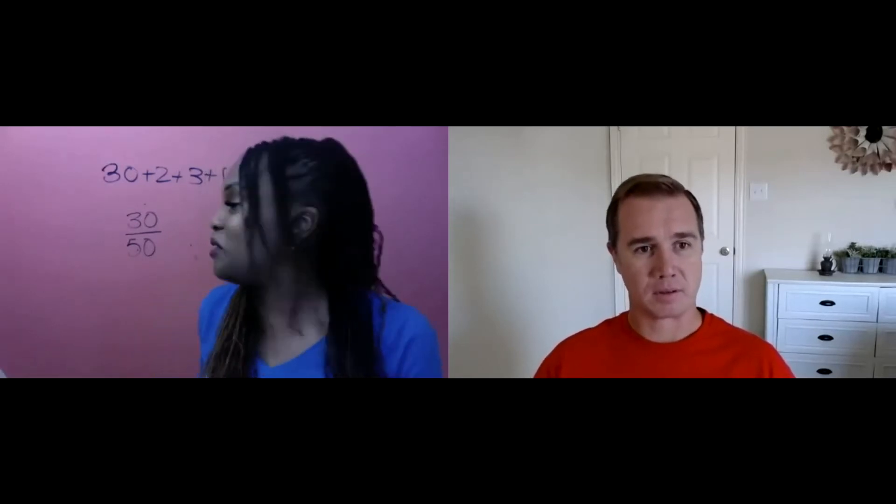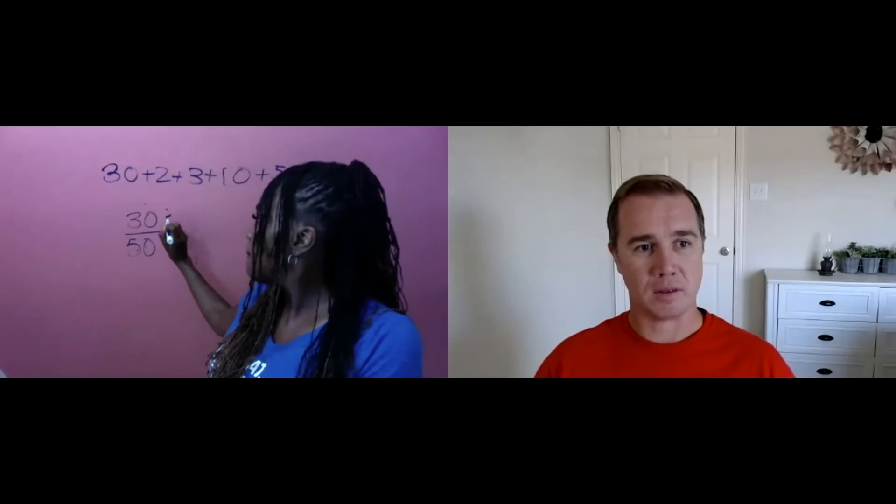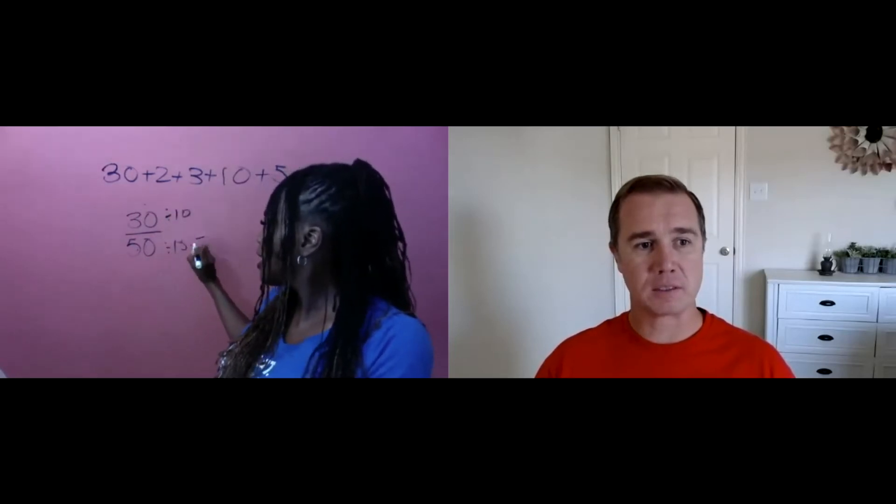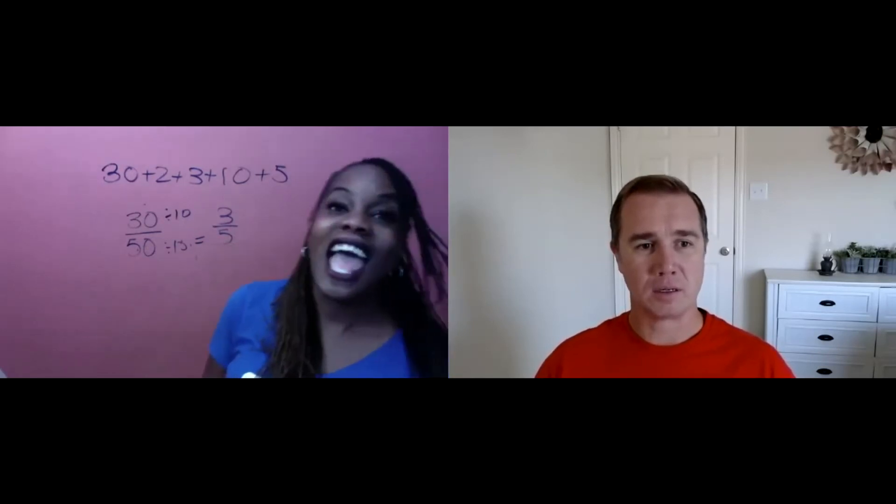So 50 would be in the denominator, and the grapes—that part—was 30. So 30 grapes to 50 pieces of fruit: part to whole. If I put that in lowest terms, they both have a factor of 10 in common, so dividing both by 10 gives me three-fifths. So for every three portions of grapes there are five total portions.